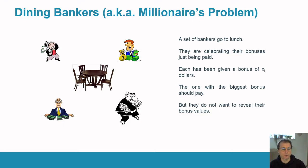The classic way of explaining computing on encrypted data is the so-called millionaire's problem or the dining banker's problem. Imagine you've got four bankers here and they want to go to lunch and they're celebrating their bonuses. They've all got a bonus of XI dollars.